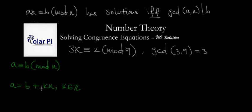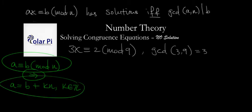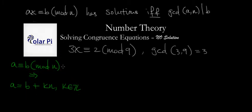Here K is an integer. A, B, N, and X are all integers since we're working in modular arithmetic — the Z symbol means integers, in case you didn't know, so K is a member of the integers. What I'm saying is this congruence always implies that linear equation. So equipped with this translation, we can write that 3x ≡ 2 mod 9 always implies that 3x equals 2 plus 9K, where K is a member of the integers.